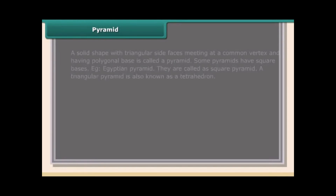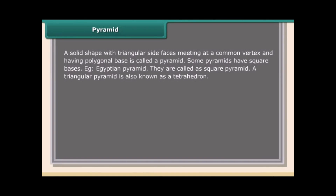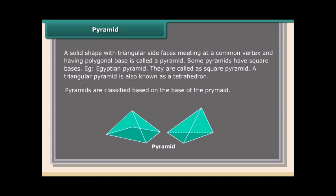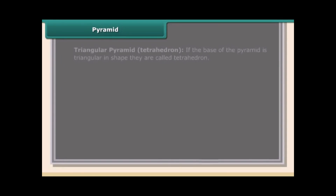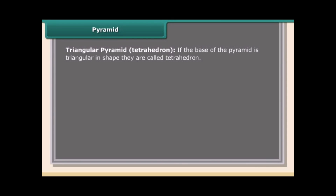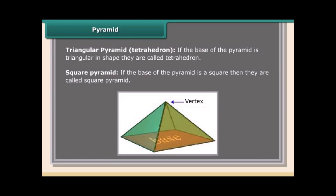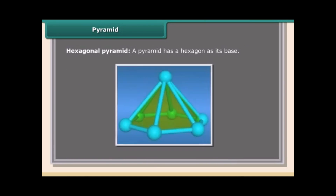A pyramid is a solid shape with triangular side faces meeting at a common vertex and having a polygonal base. Some pyramids have square bases, such as the Egyptian pyramid — these are called square pyramids. A triangular pyramid is also known as a tetrahedron. Pyramids are classified based on their base: a triangular pyramid is called a tetrahedron, a square pyramid has a square base, and a hexagonal pyramid has a hexagon as its base.